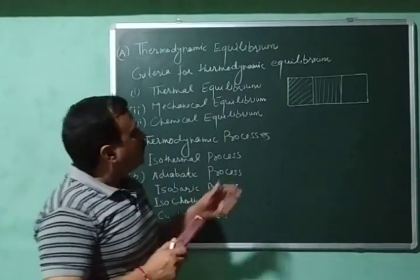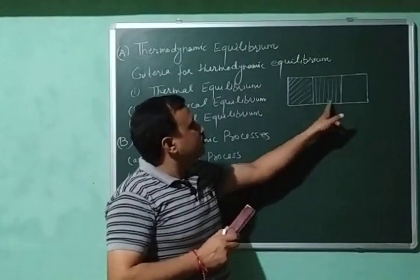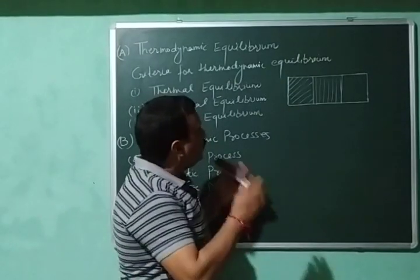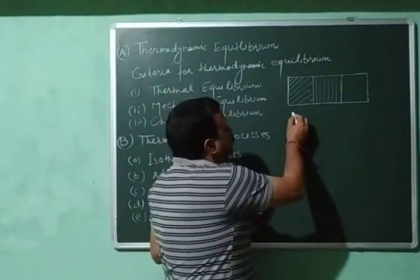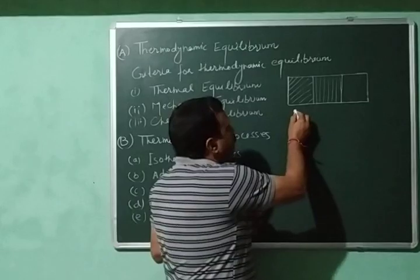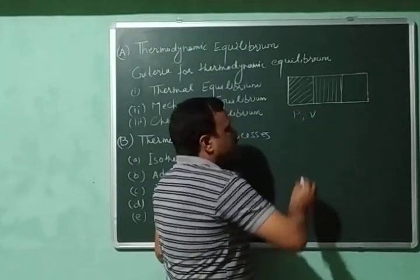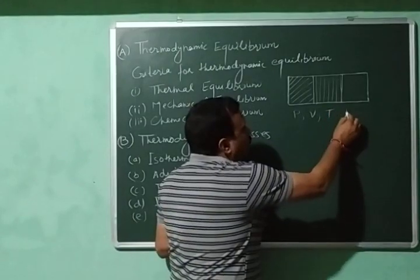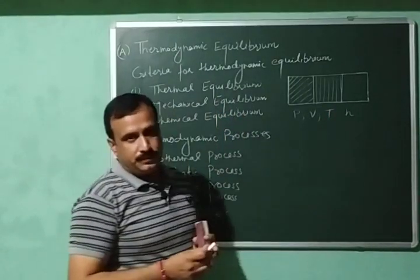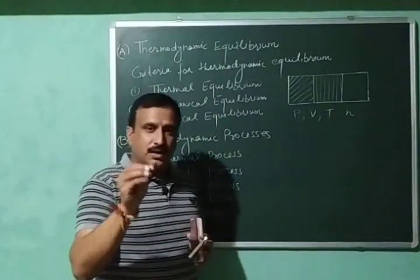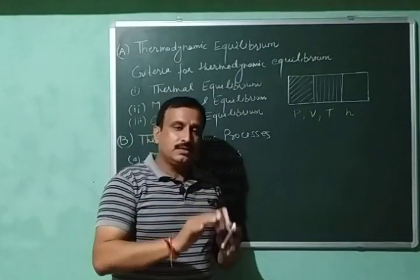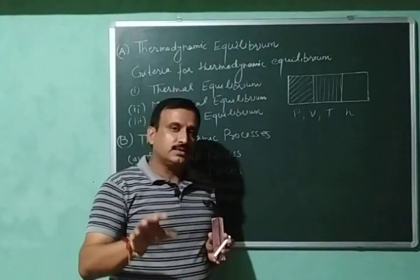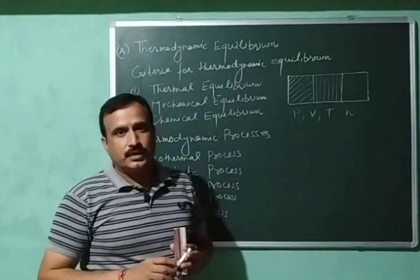Suppose we have a heterogeneous system comprised of three different phases, and if its pressure is fixed at P, its volume is fixed at V, temperature is T, and composition is fixed at N, and if there is no change in these macroscopic properties with time, then the system is in thermodynamic equilibrium.